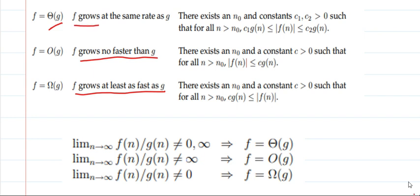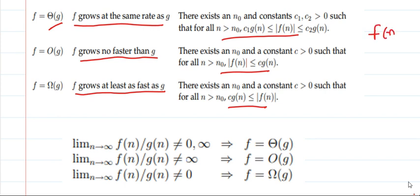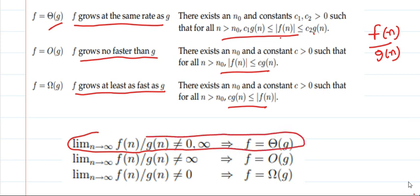Now we try to convert these formal definitions in terms of limits. If we focus on the ratio f(n) / g(n), it is clear that if this ratio converges to some constant, then f is Theta of g. The key thing to notice is that the symbol here is an implication, not a double implication — meaning this is not an if-and-only-if condition. There may be some functions for which this limit does not exist, but f(n) is still equal to Theta of g(n), so we cannot generalize this.